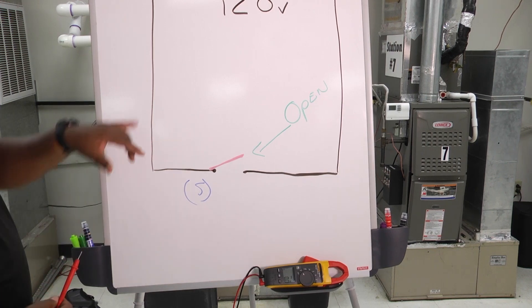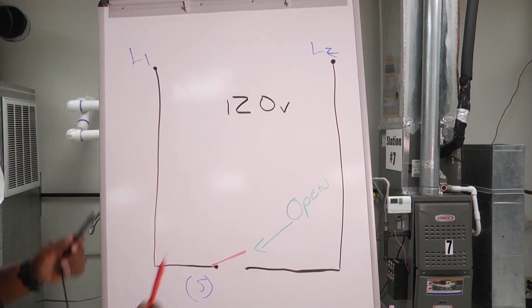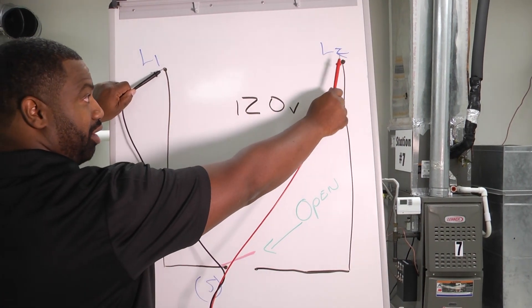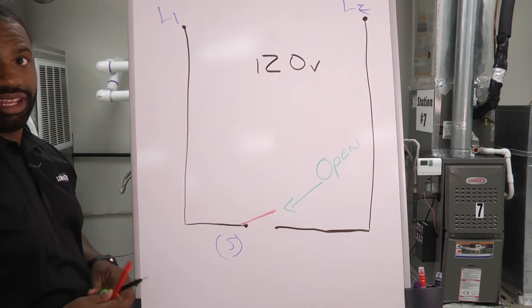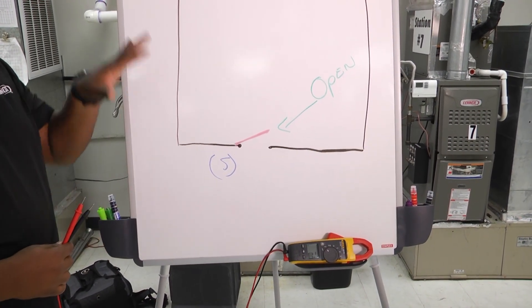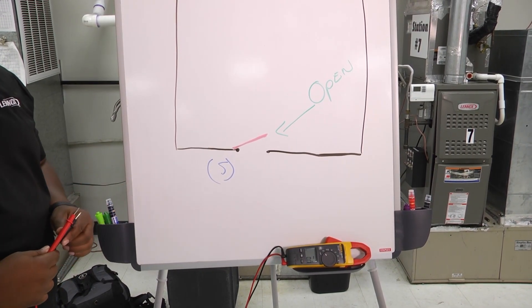If it's open, we are going to see the voltage because our meters are gonna measure between L1 and L2 a difference in potential. That's what our meters do when we have it set to volts and we put it between two points, it's measuring a difference in potential.